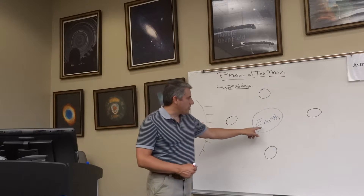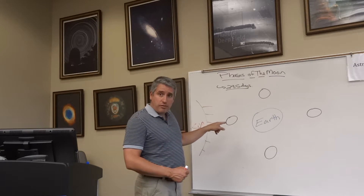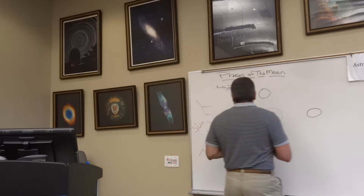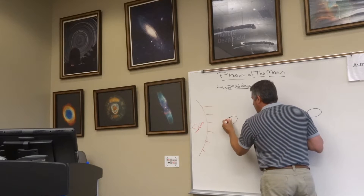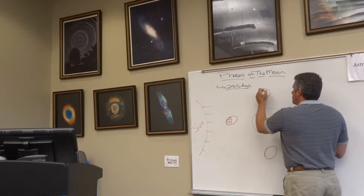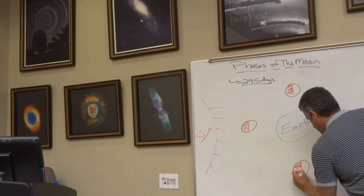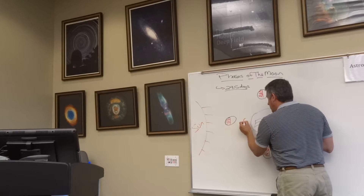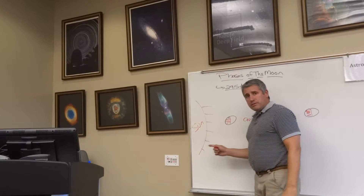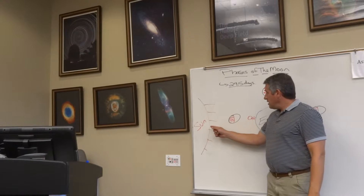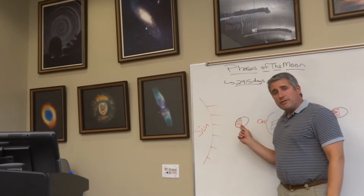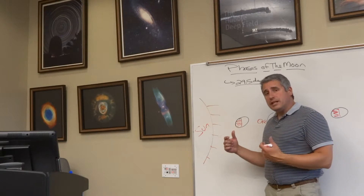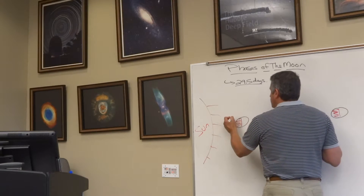I've drawn here an Earth, a Moon orbiting — revolving around — the Earth, and the Sun. I'm going to light the half of the Moon that's facing the Sun. So, using the red pen, that's the lit portion of the Moon. If we're standing right here on the Earth and we look up, we see the Moon fully dark. No portion of the side that's facing us is illuminated at all. That is known as New Moon.